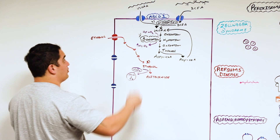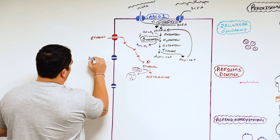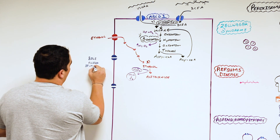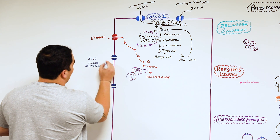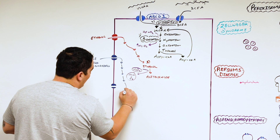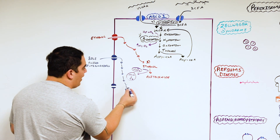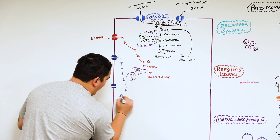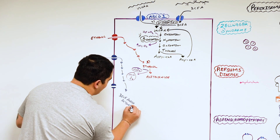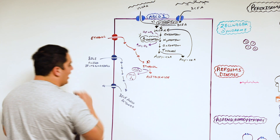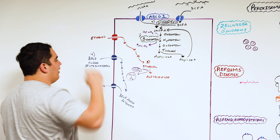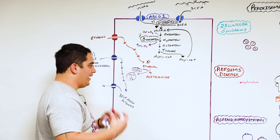The fourth function of peroxisomes involves bile acids. These bile acid intermediates are not yet activated, so they have to get taken up into the peroxisome. Through particular enzymes present within the peroxisomes, these intermediates are activated into activated bile acids, which are then released and sent to the smooth endoplasmic reticulum. This is the fourth function: bile acid activation and metabolism.